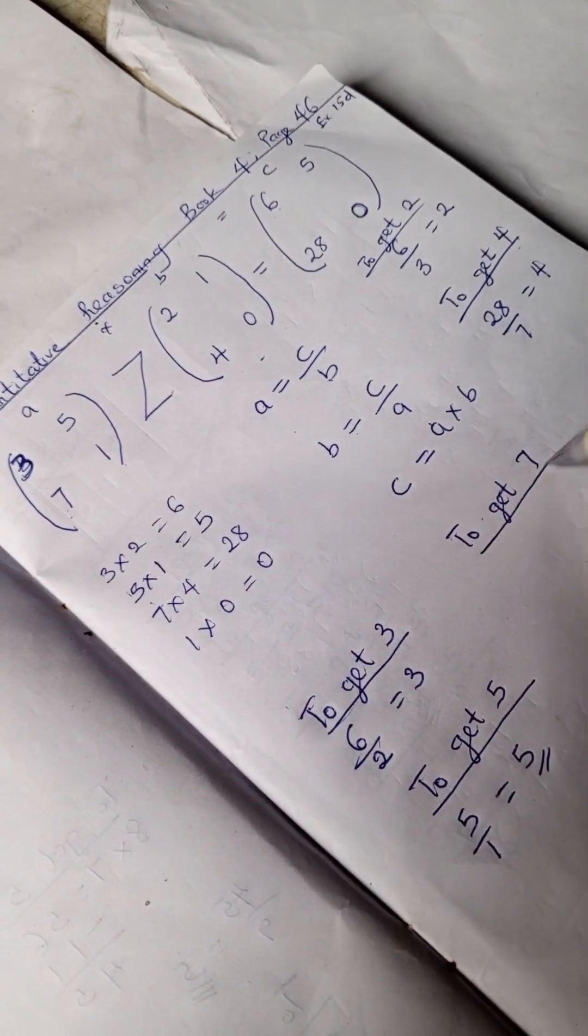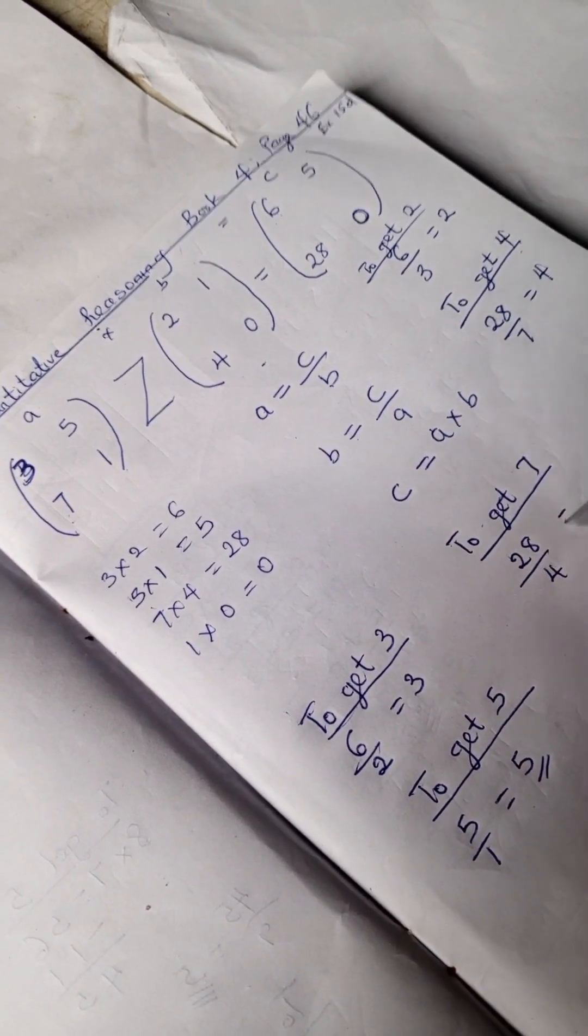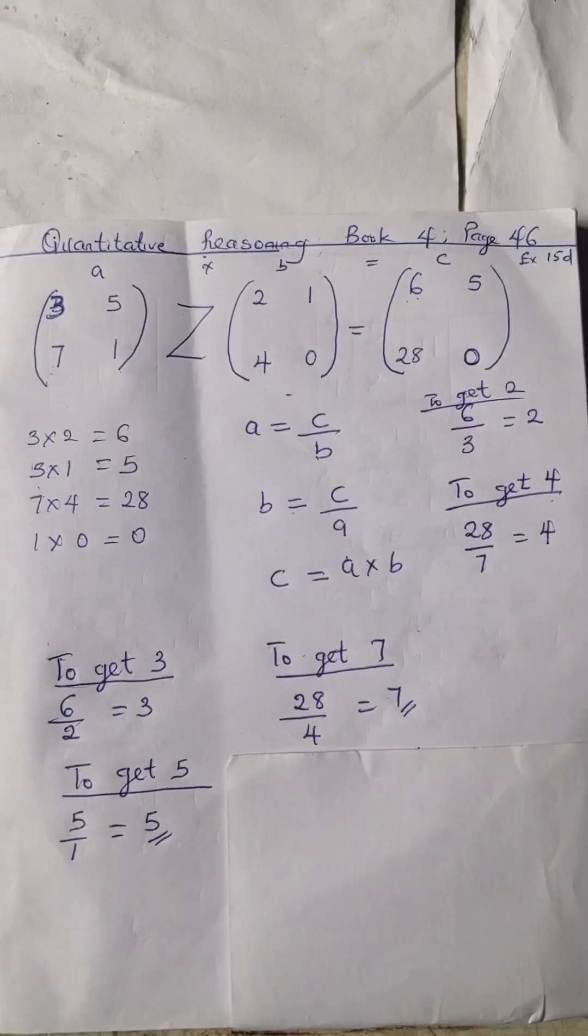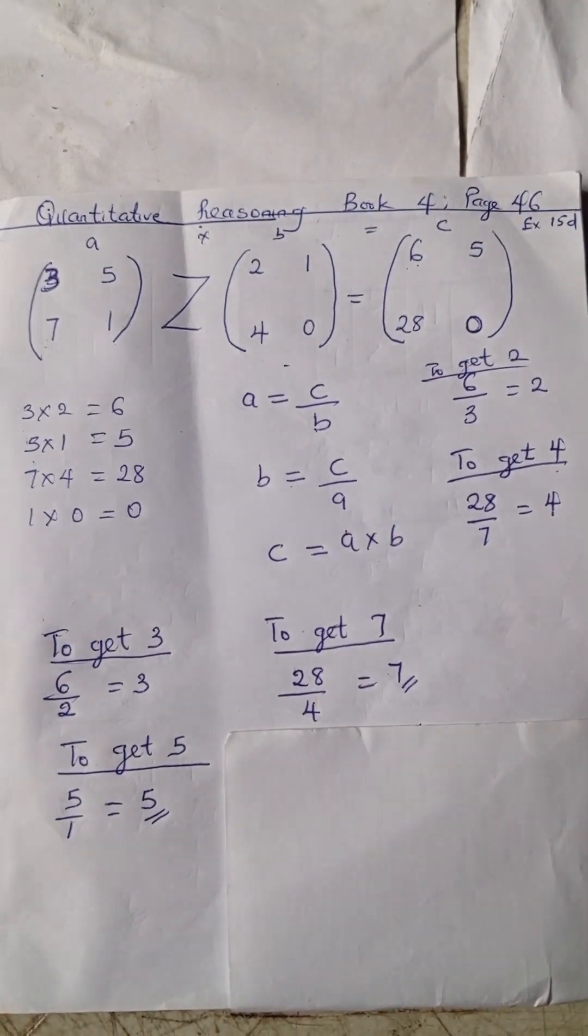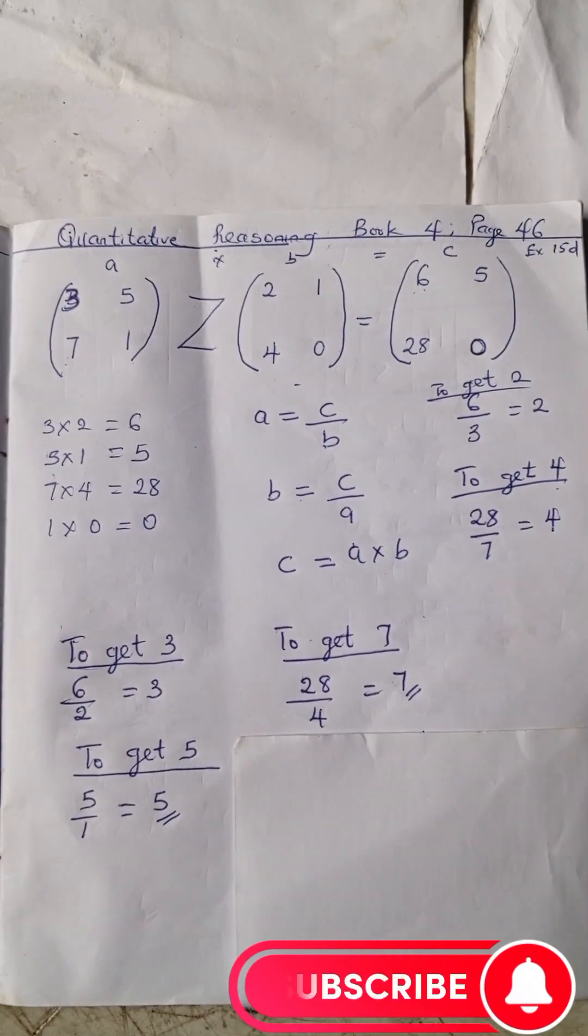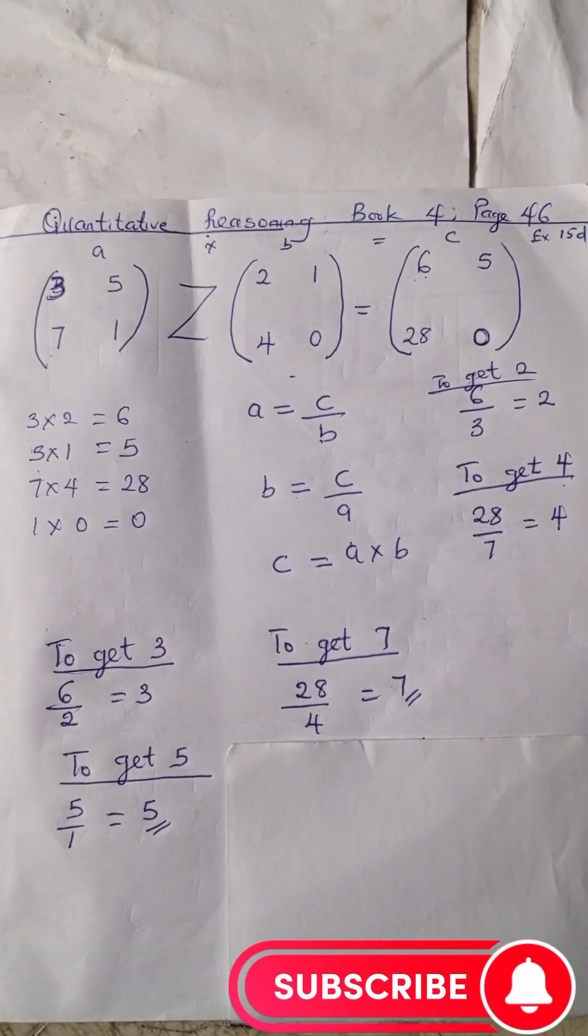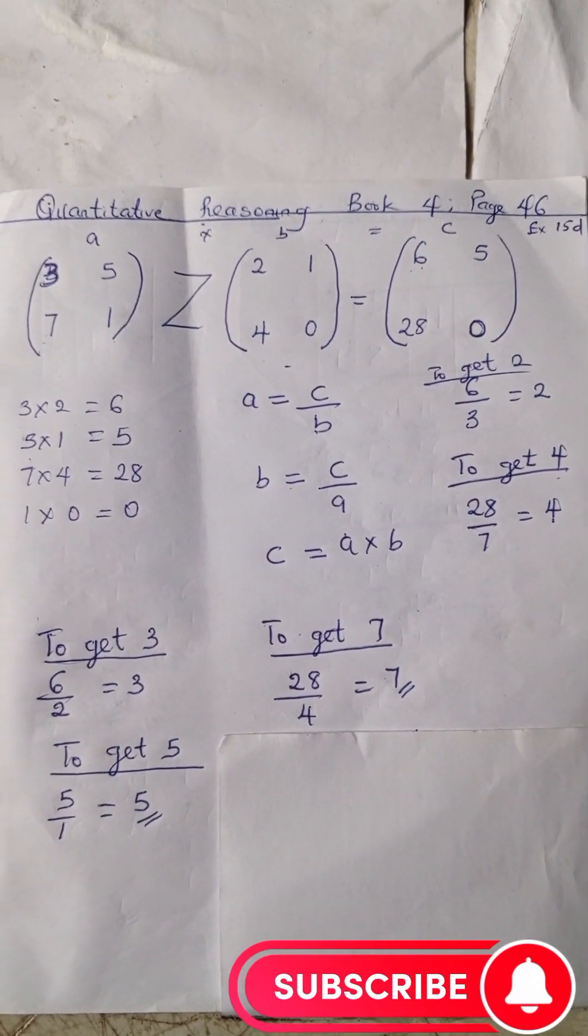To get 7, we have 28 divided by 4 is 7. Don't forget to subscribe to this channel for more quantitative reasoning solutions and mathematics learning. Bye!